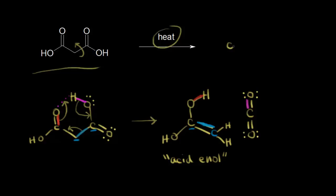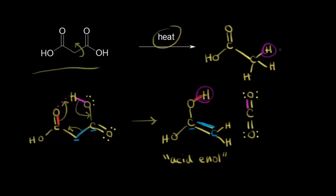Let me go ahead and draw acetic acid up here. We have the OH on the left side, and then a carbon with three hydrogens bonded to it — so this would be the keto-type form. The difference between the enol and the keto form is the movement of one proton: here the proton is on the oxygen, and in the keto form it's on the carbon. The double bond also moves — here it's between the two carbons, and in the keto form it's between the carbon and the oxygen. We also produce CO2 as the other product for this reaction.